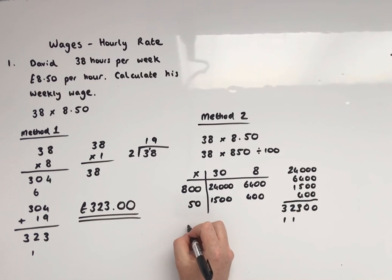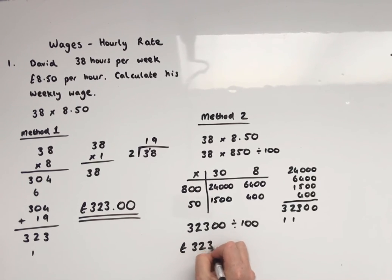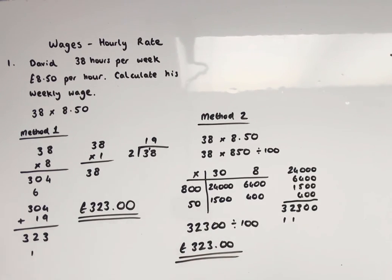Okay, so I've got 3, 2, 3, 0, 0. Dividing by 100 and then pence into pounds gives us £323 and no pence. Okay, keep the two decimal places on there even if it is a whole to show that there's no pence, because sometimes there will be.